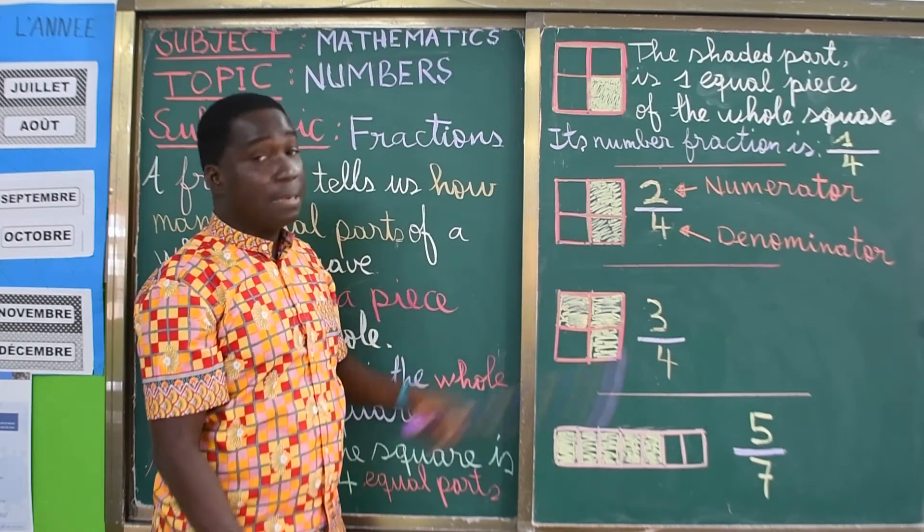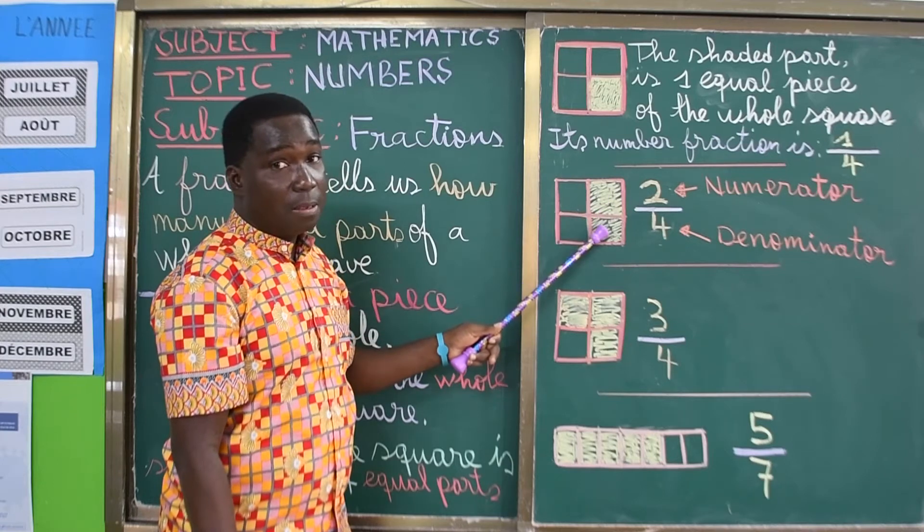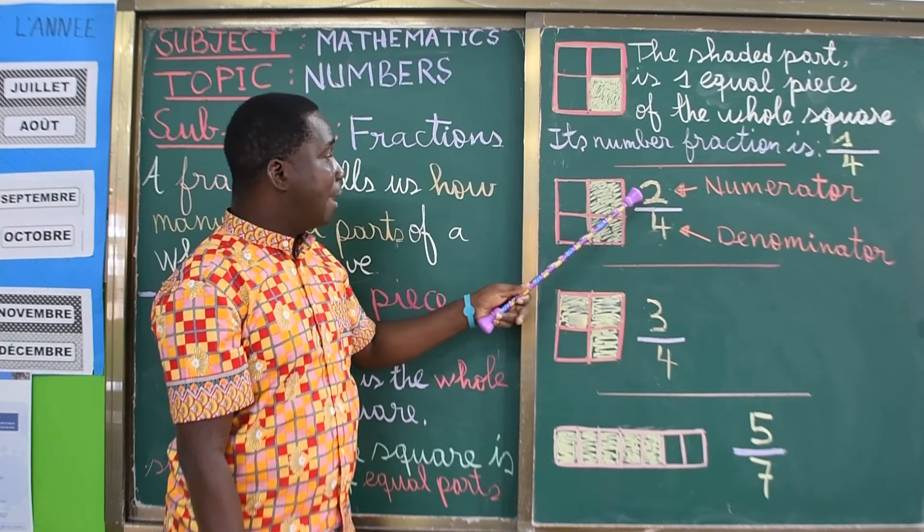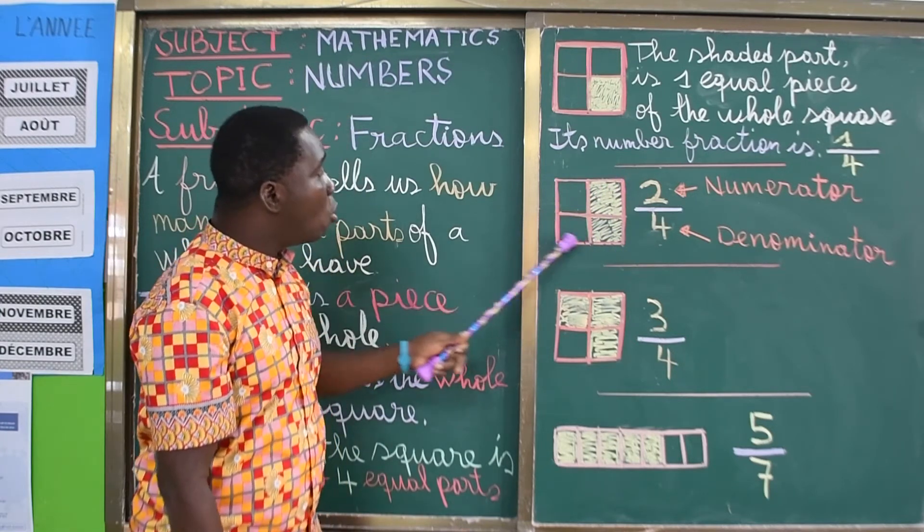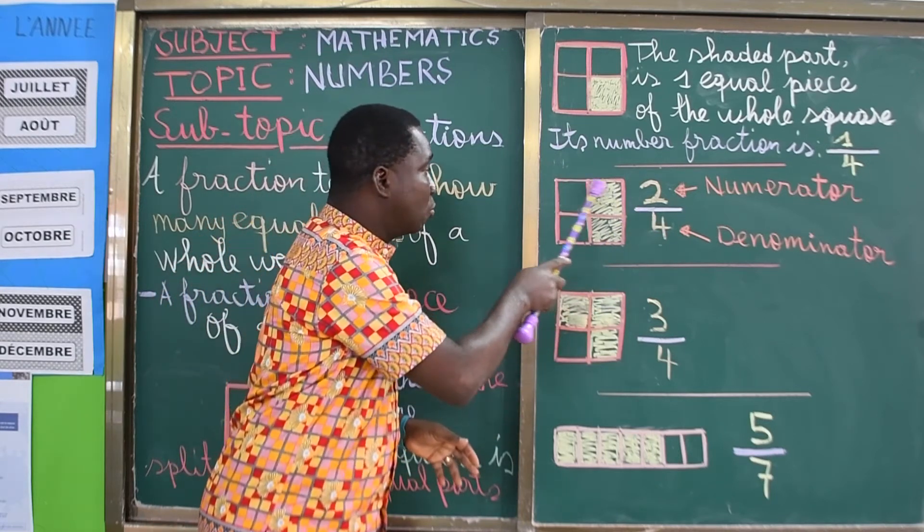When we come here, the same square, we have shaded two of the parts. So the two here and the four here is one, two, three. The whole square is divided into four parts.